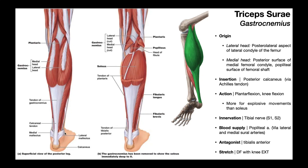The action at the ankle joint is going to be plantar flexion. The gastrocnemius does produce a little bit of subtalar inversion, but the major subtalar inverter is tibialis posterior, which we'll cover in the next video. So for the ankle joint, we mainly have plantar flexion. At the knee joint, the gastrocs can facilitate a little bit of knee flexion also. The hamstrings are still the major knee flexor, but the gastrocs can still participate a little bit.